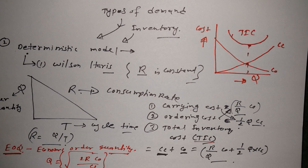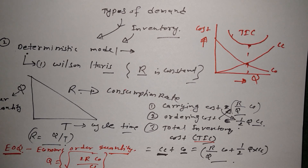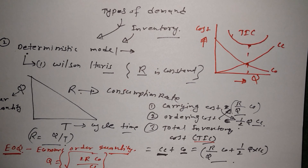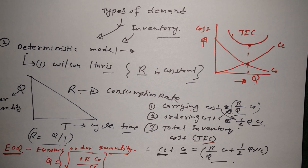This is all about the Wilson-Harris method, where consumption rate is constant — one type of the deterministic model. Thanks for watching, see you soon in my next video.